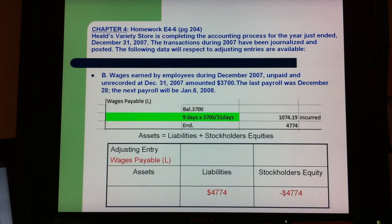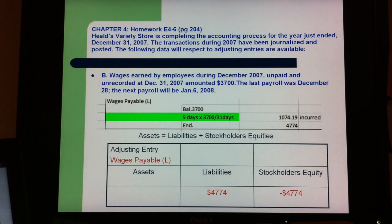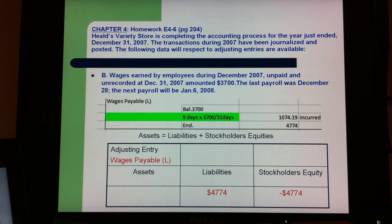This part is about wages payable. The wages payable calculated is a liability of $4,774. Based on nine days — the last payroll was December 28th and the next payroll will be January 6th — nine days times $3,700 divided by 31 days equals $1,074.19. Adding $3,700 gives a total of $4,774.